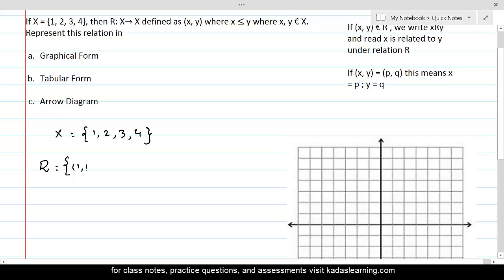So this would be (1,1) because the condition is that x is less than or equal to y. It can be equal to y as well. So (1,1), (1,2), (1,3), (1,4), (2,2), (2,3), (2,4), (3,3), (3,4), and (4,4) are all included.